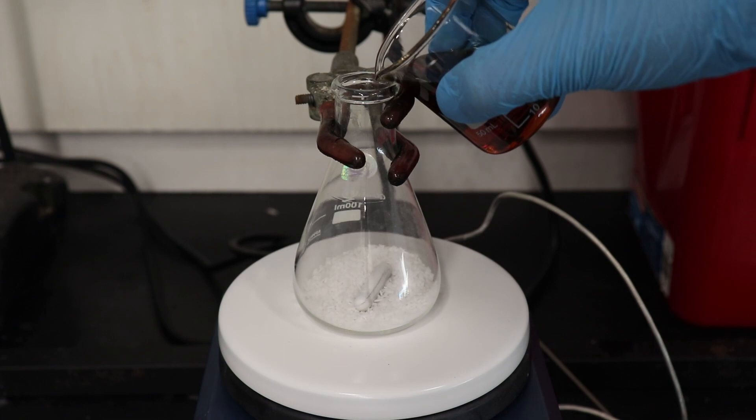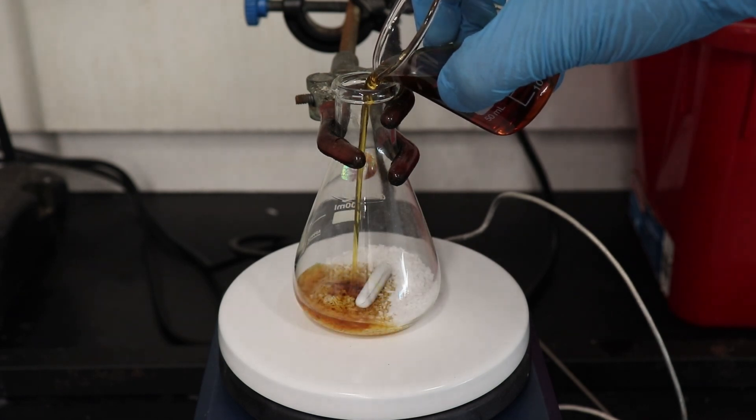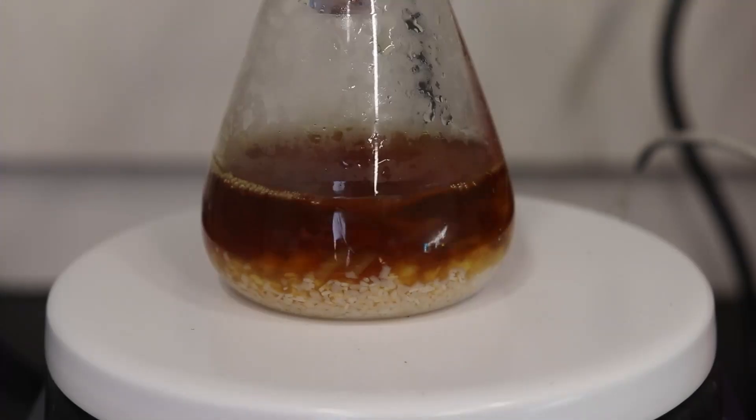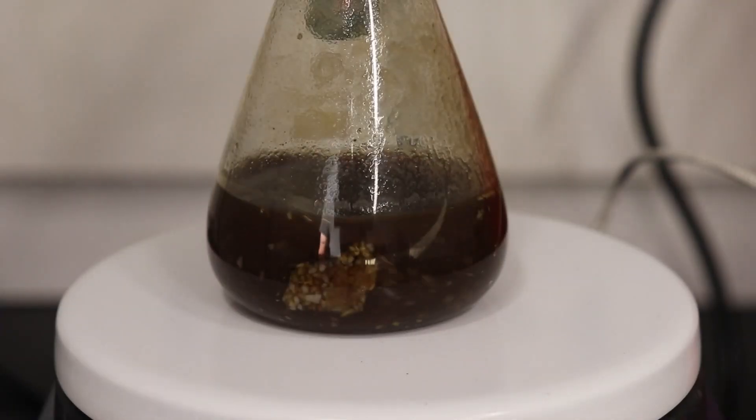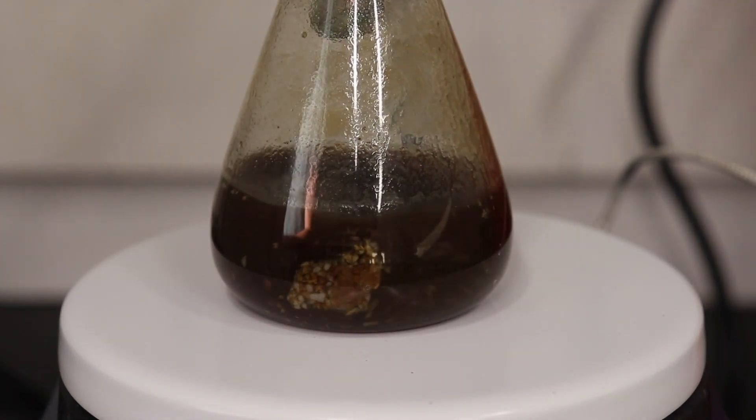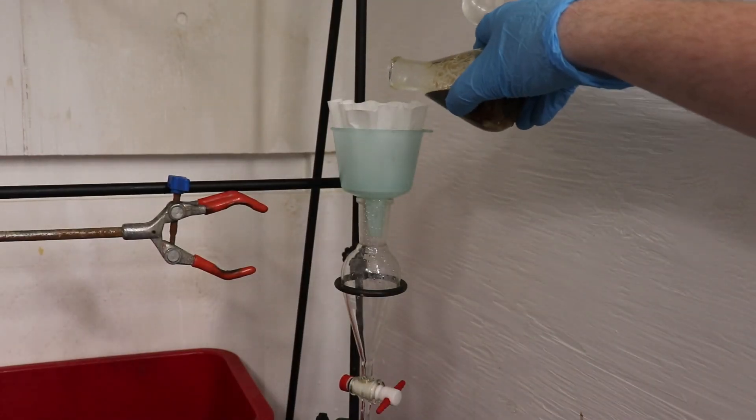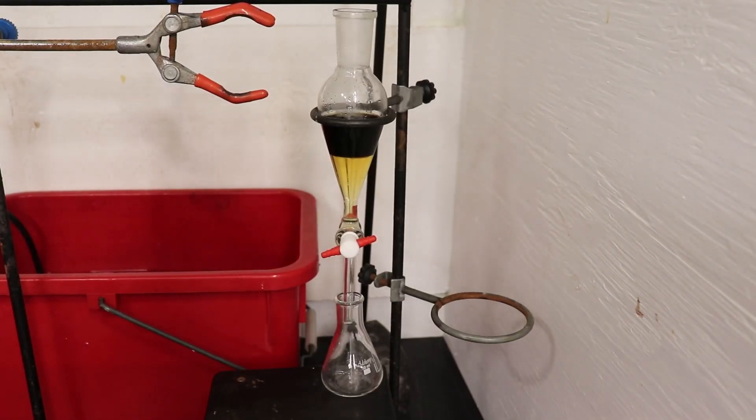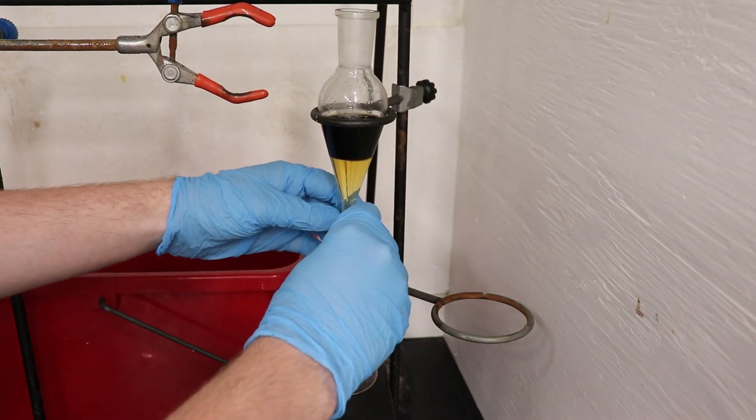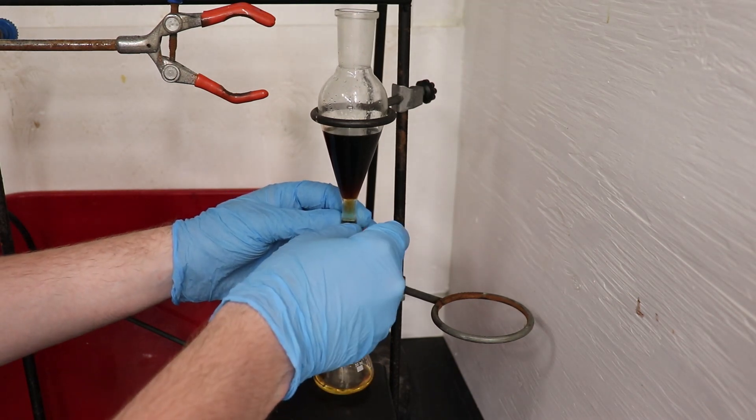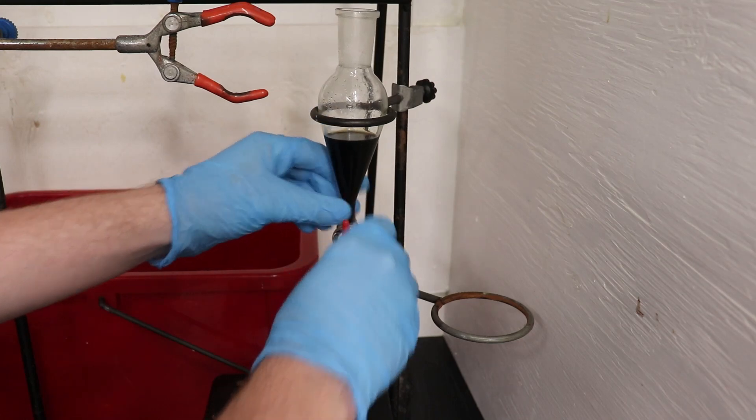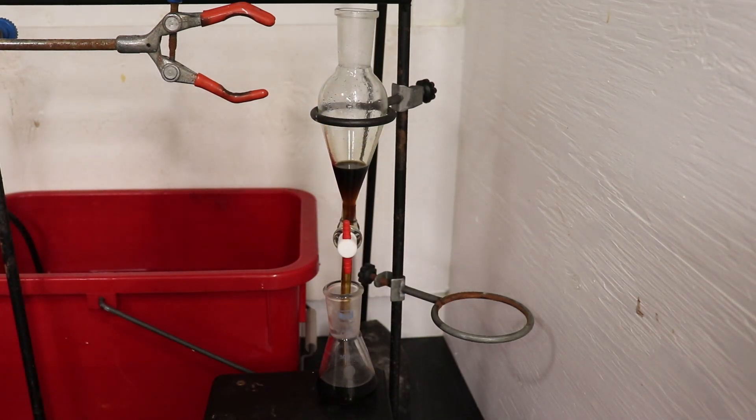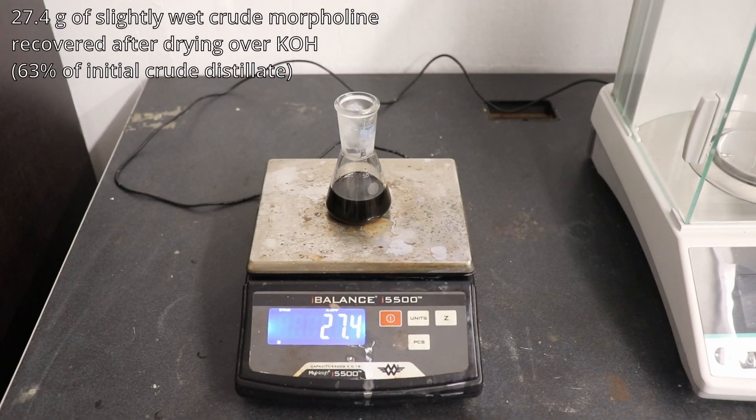To dry the crude morpholine distillate, it was stirred over 20 grams of potassium hydroxide for about one hour. The remaining solid potassium hydroxide was filtered off into a separatory funnel, and the lower aqueous layer was then discarded and upper morpholine layer transferred to an Erlenmeyer flask. The crude morpholine now weighed 27.4 grams after drying over potassium hydroxide.